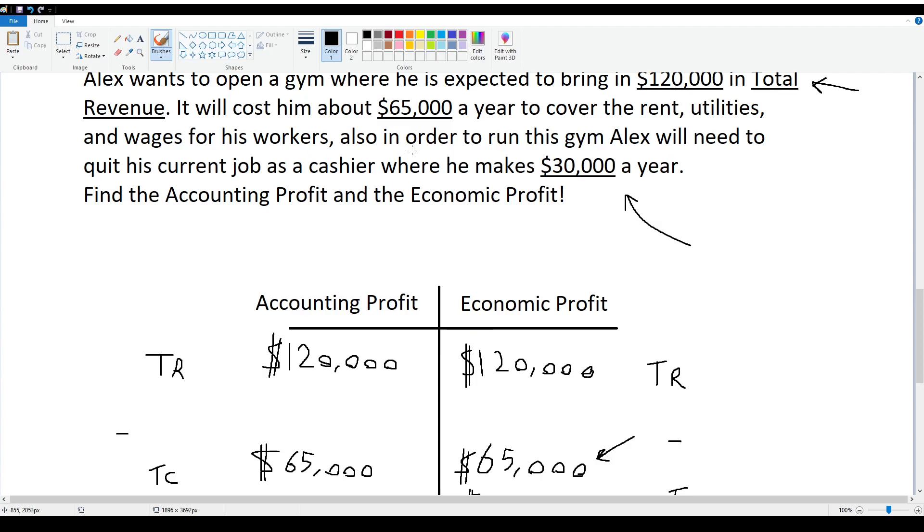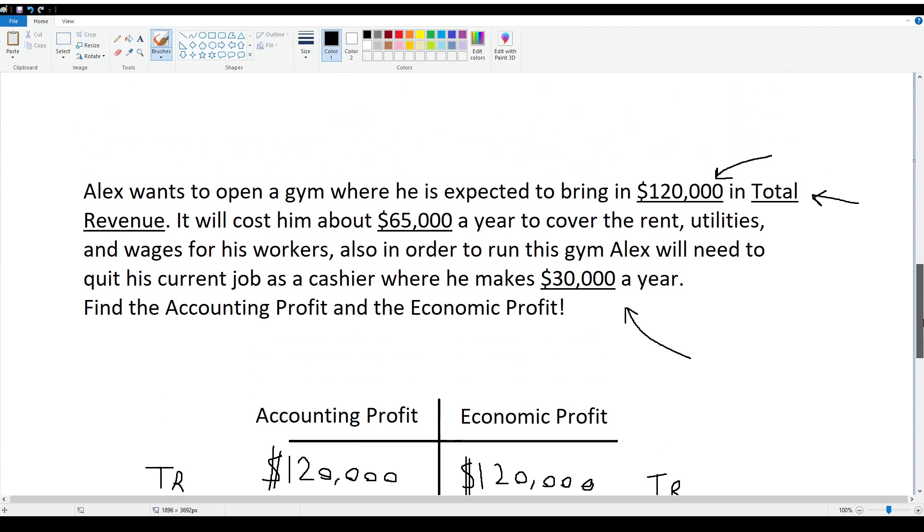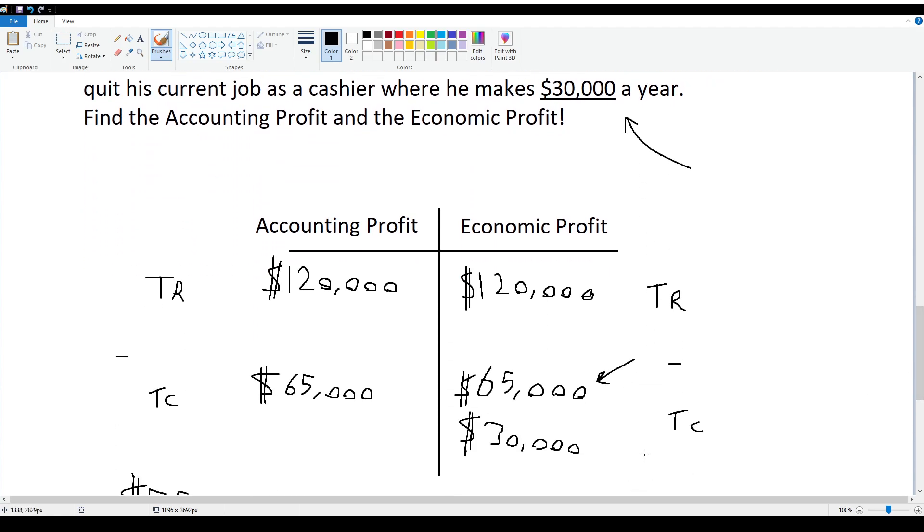If that explains implicit cost a little bit better, he could be making $30,000 being a cashier, but he's giving that up in order to pursue this gym idea. So we're going to take note of it and put it right over here.